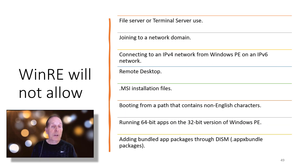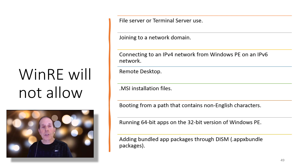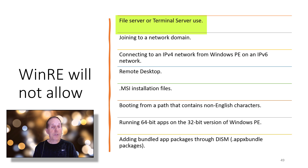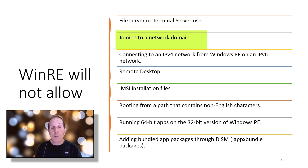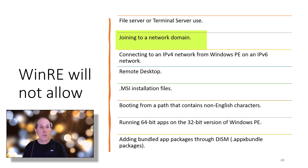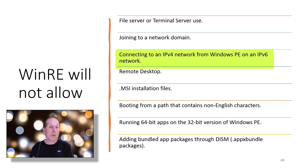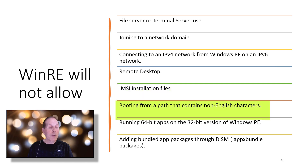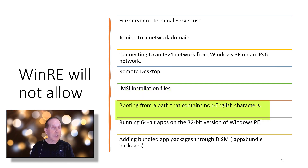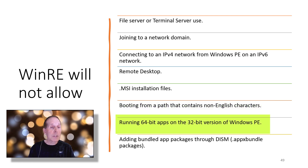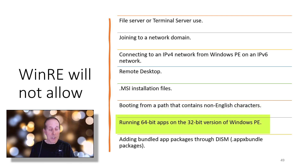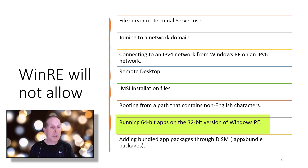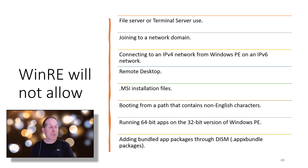There are things you can't do with Windows RE — they're basically limitations of Windows PE, the base operating system. You can't use it as a file server or terminal server. You can't join Windows PE or Windows RE to a network domain, can't connect from an IPv4 to an IPv6 network, can't use Remote Desktop, can't install applications, and if you're trying to boot from a path with non-English characters it won't work. You're also limited to the bitness of the base OS — a 32-bit Windows PE can't run 64-bit apps. You can't add bundled apps through DISM.